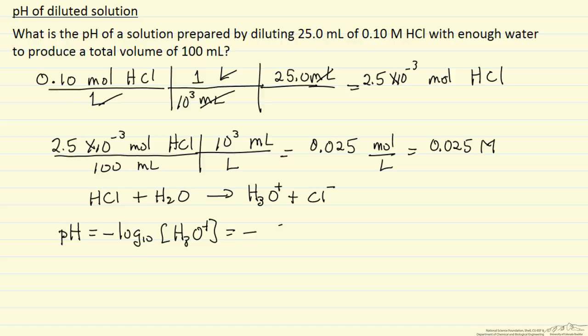So in this case minus the log. Now this is defined where the concentration is in molar units. And so this is minus minus 1.6. So the pH of this final solution is 1.6.